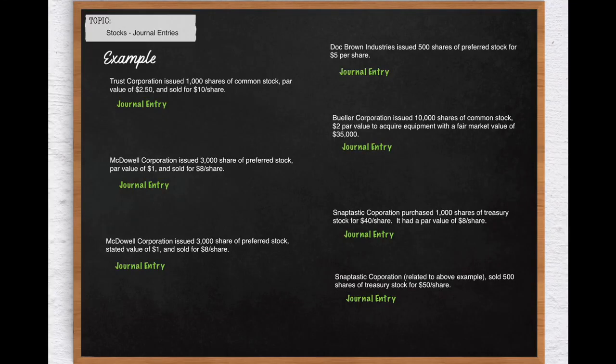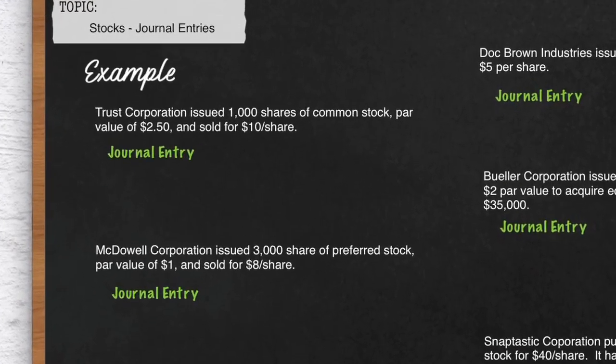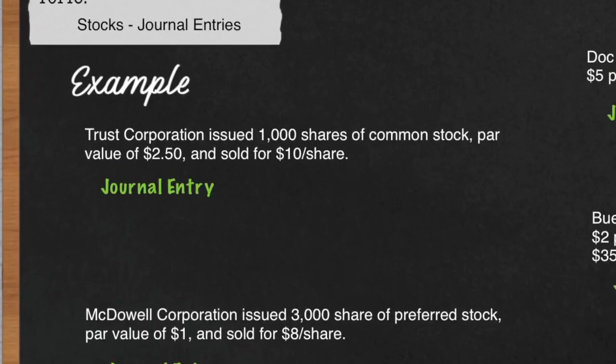Let's discuss journal entries for stocks by going over examples. In our first example, Trust Corporation issued 1,000 shares of common stock with a par value of $2.50 and it sold for $10 per share.